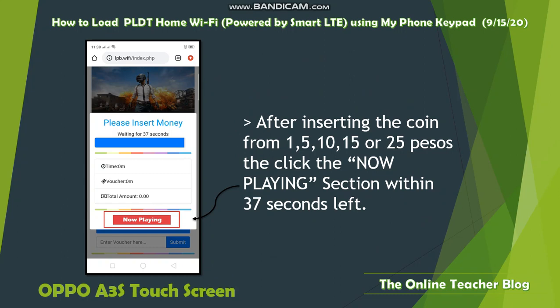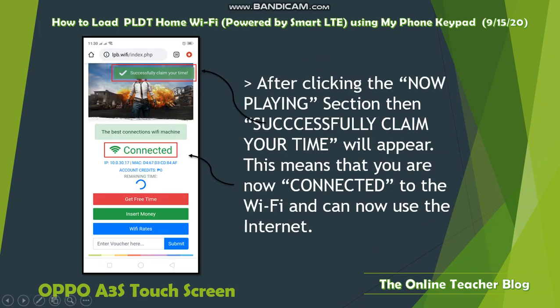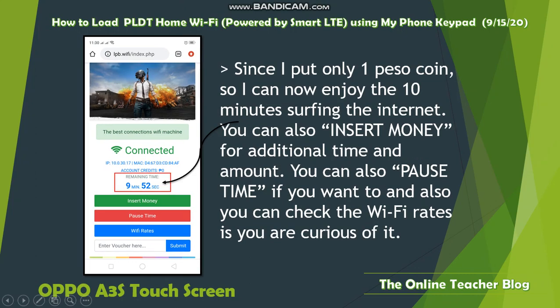After inserting your coin — whether 1, 5, 10, 15, or 25 pesos — click the 'Now Playing' section within the 37-second countdown. If it goes to the server and fails, you need to re-enter it. After clicking 'Now Playing,' a 'Successfully Claimed' message with your time will appear. This means you are now connected to Wi-Fi and can use the internet. Since I put in one peso, I can now enjoy 10 minutes of internet surfing.